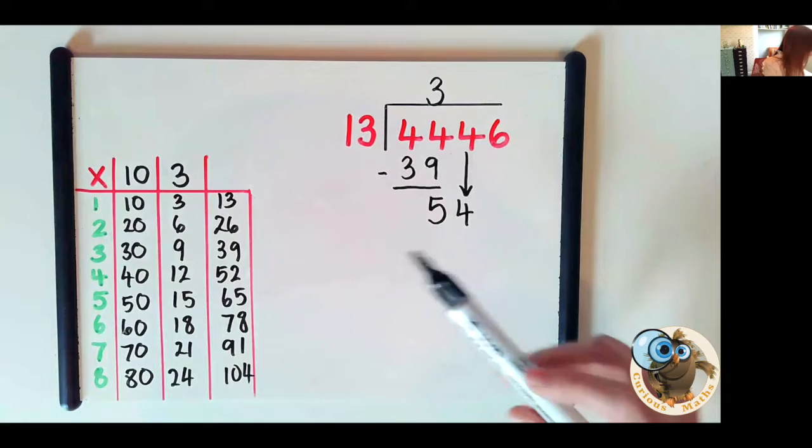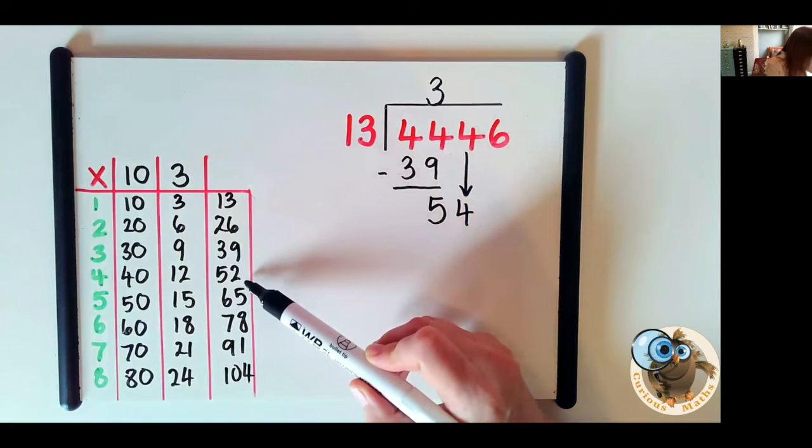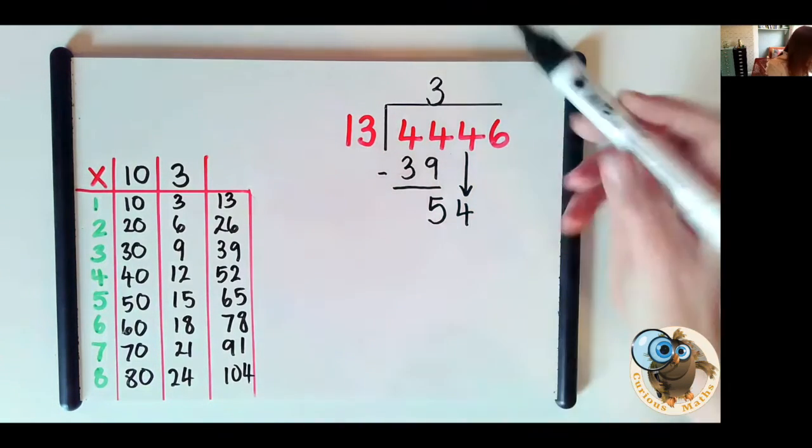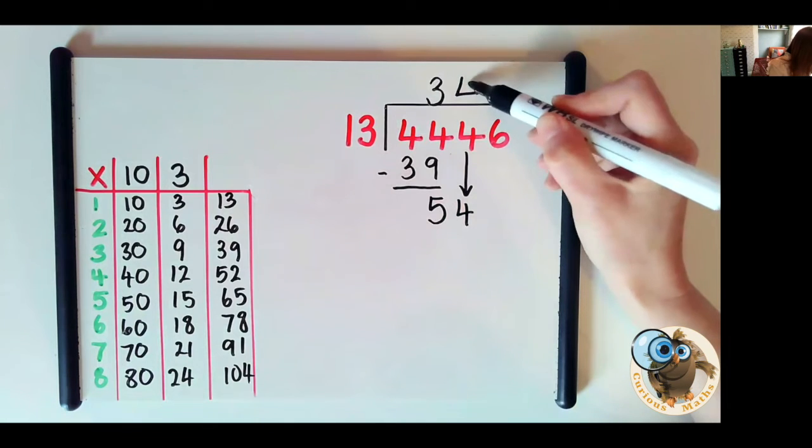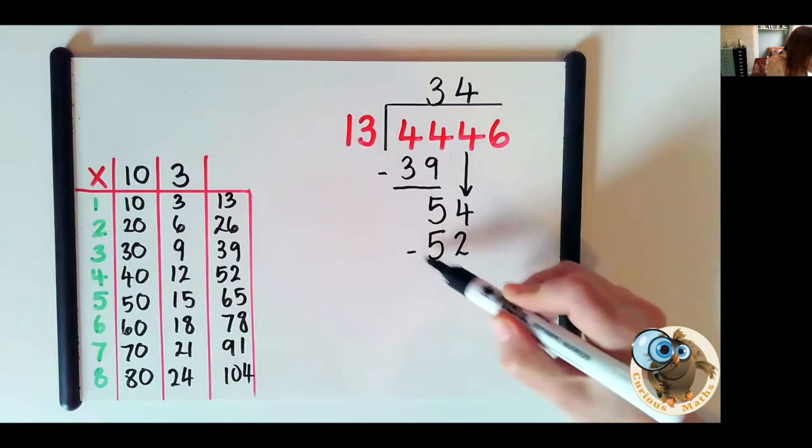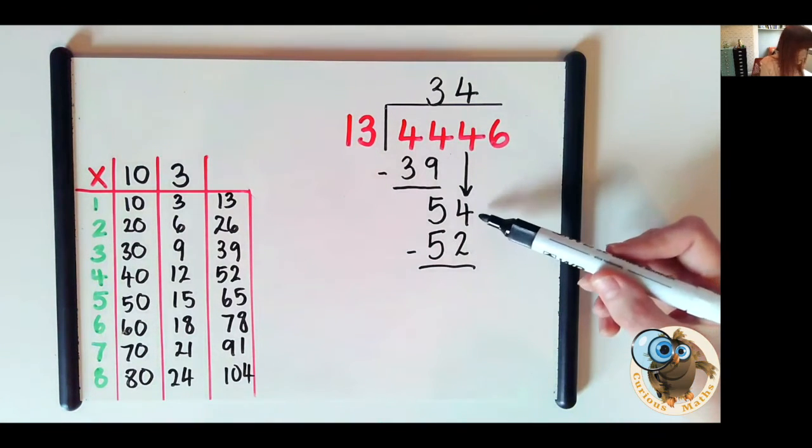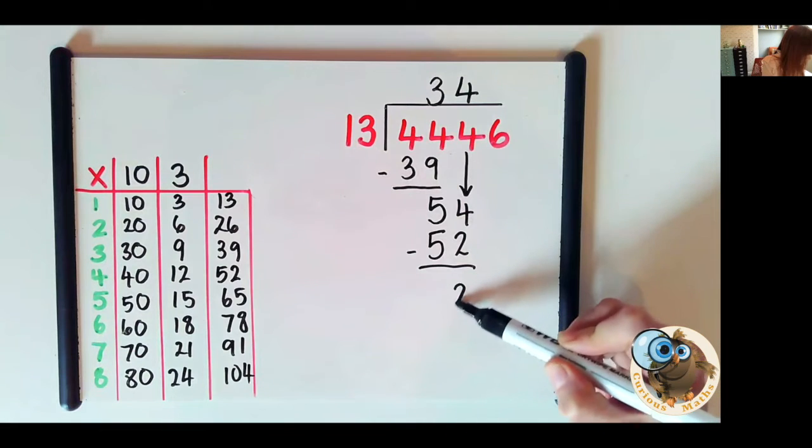Now we ask how many 13s in 54? So we go back to our chart. 4 13s are 52. So 4 13s are 52 and you'll notice I'm talking through it and it's exactly what I do in school and with groups of children, talking through as we go along.